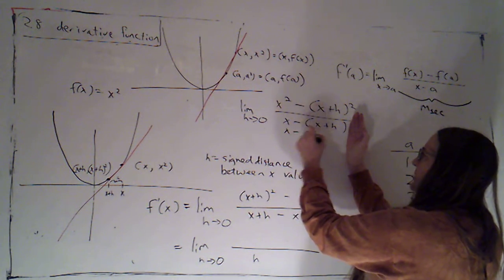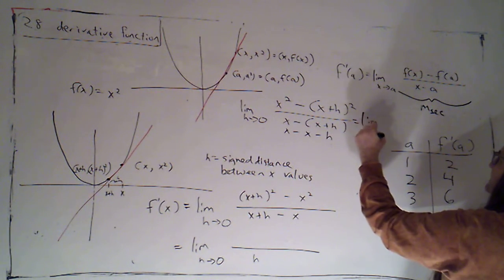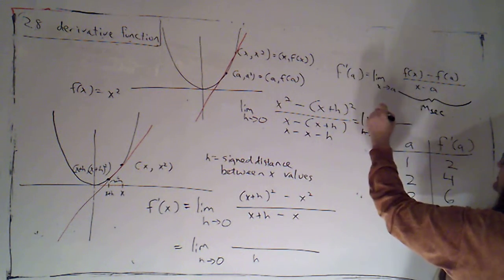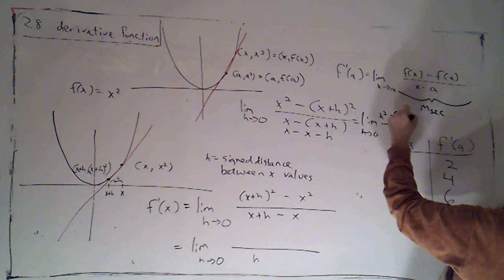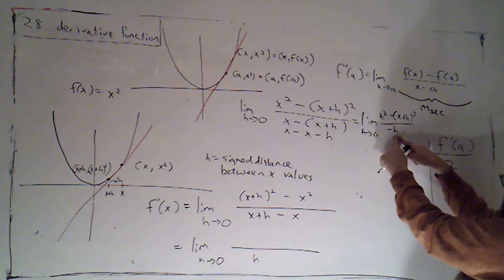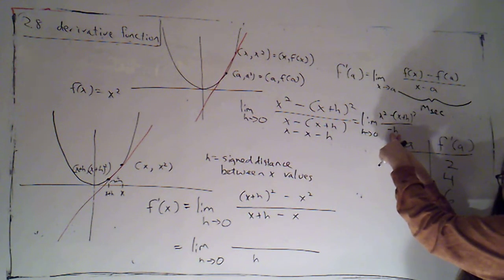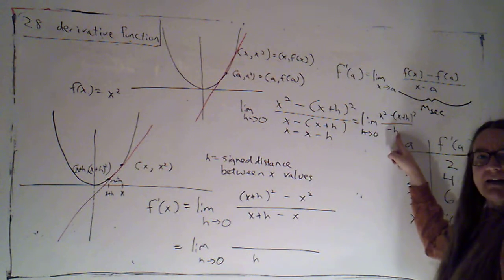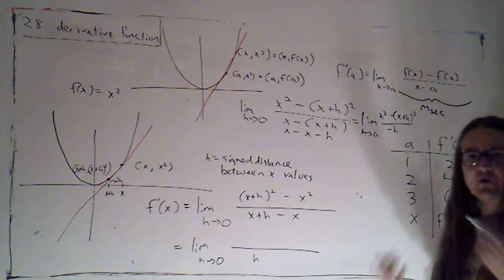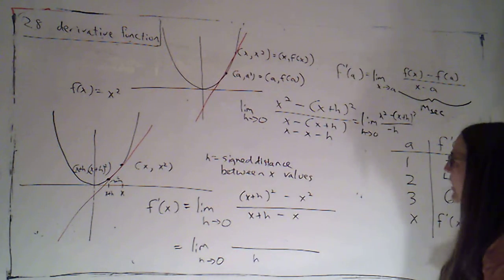And this would become the limit as h goes to zero of x squared minus x plus h squared over negative h. If I subtract in that order, it's not wrong, but it's going to introduce a negative sign in the denominator. It's just a little bit more complicated. So I'm always going to be strategically lazy and go for the simpler setup.